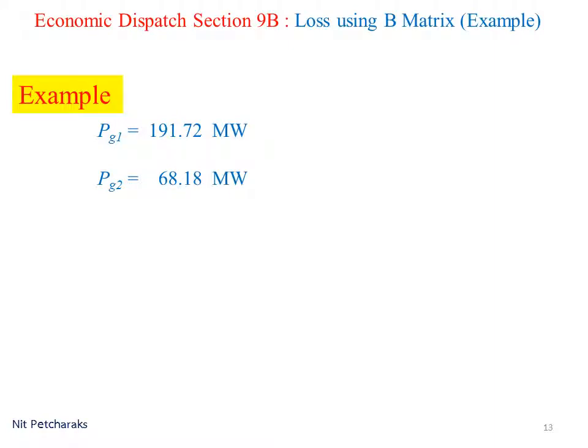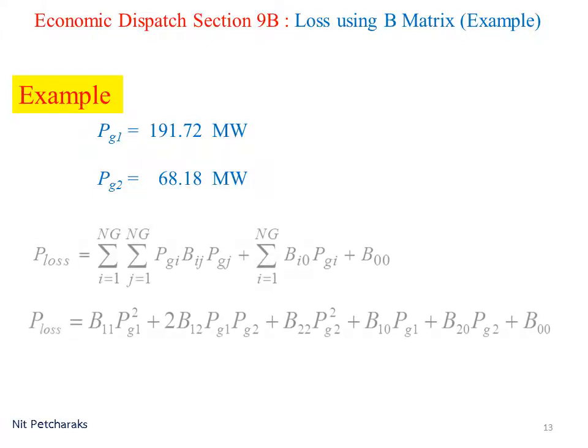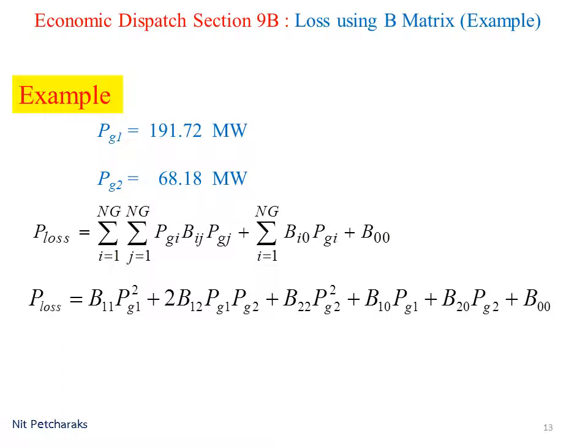We know the value of PG1, PG2, and B-metrics. We can calculate power loss from this formula. The estimation of power loss is 10.5 megawatt.